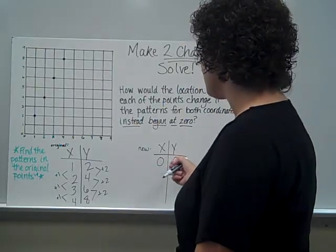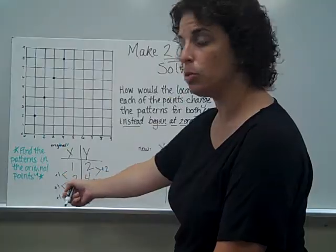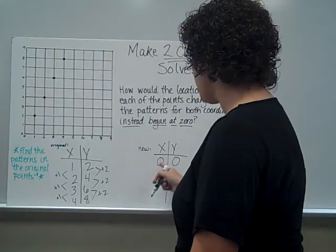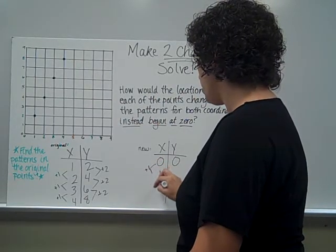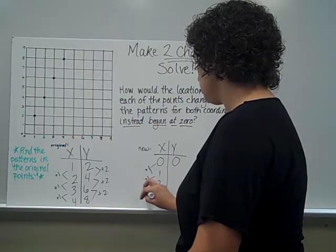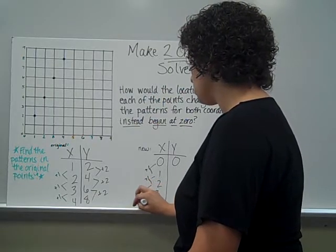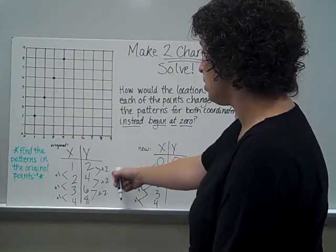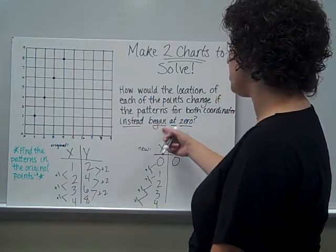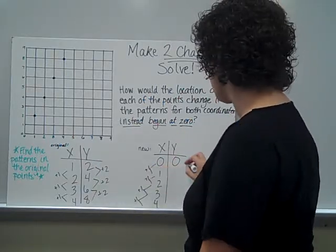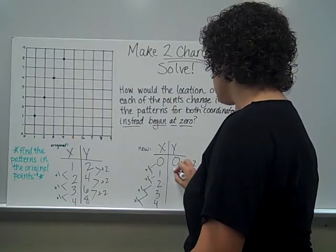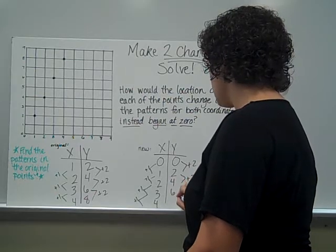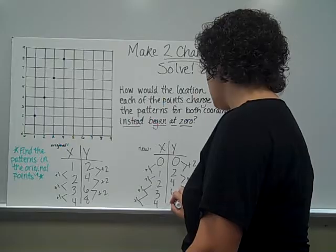That's why I filled in a 0 for x and a 0 for y. Now I needed this rule because I'm going to continue that. Plus 1: so 0 plus 1 would be 1, 1 plus 1 is 2, plus 1 is 3, plus 1 is 4. My rule for y was add 2. Instead of starting at 2, it told me to instead begin at 0. So here I am at 0, and plus 2: 0 plus 2 is 2, 2 plus 2 is 4, 4 plus 2 is 6, 6 plus 2 is 8.